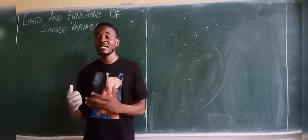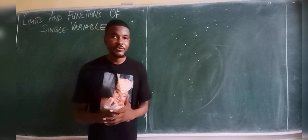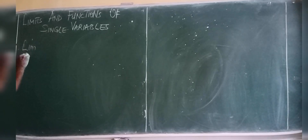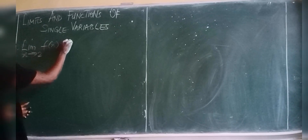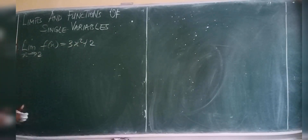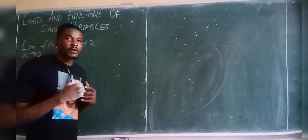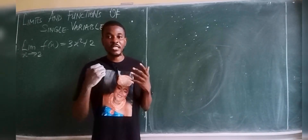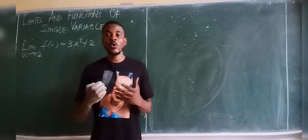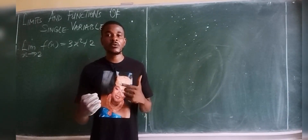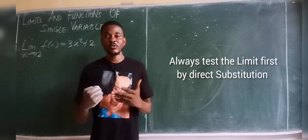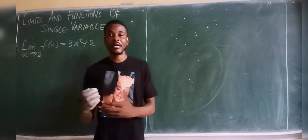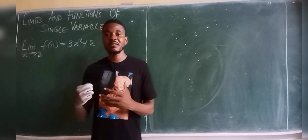We will start with the substitution method in this video, and in subsequent videos we'll cover the other methods, then limits at infinity and continuous functions. For any limit problem, the first thing you always do is test by direct substitution. It is only when substitution fails that you try the alternate methods.